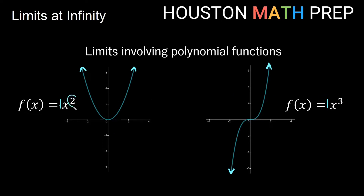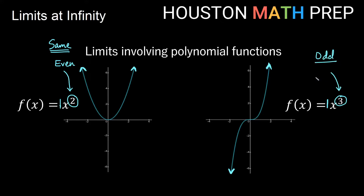The sign of our highest power term — our lead coefficient — tells us the limit as x approaches positive infinity for a polynomial. The degree of the polynomial tells us what happens on the other side. An even degree means the other side has the same behavior, so both limits at positive and negative infinity match. An odd degree polynomial means the other side has the opposite behavior, so one side goes positive infinite and the other goes negative infinite.